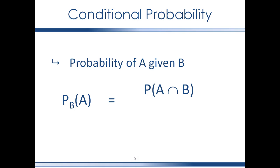And if the intersection of two sets is in the event set, then the probability measure can be applied to that intersection. So the conditional probability is derived by taking the probability of the intersection of A and B and dividing by the probability of the event B.